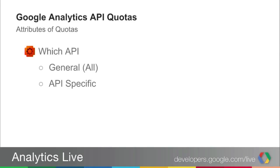So let's talk about the different types of quotas. One category is general quotas that apply to all API requests — we call them general quotas in the documentation. These are umbrella quotas that apply to all kinds of requests, may it be management, reporting, or upload. And then there are some API-specific or feature-specific quotas that apply to certain features.